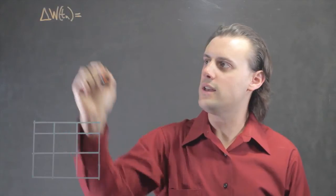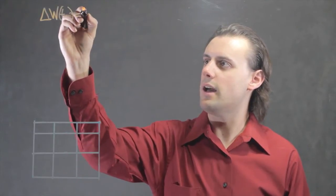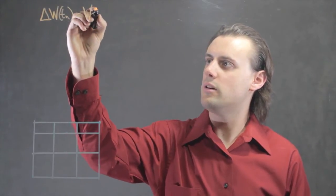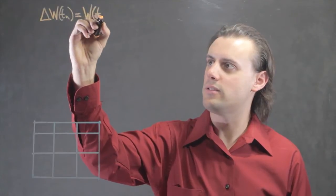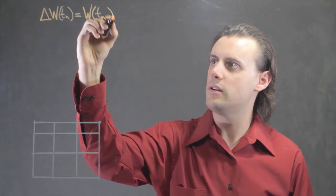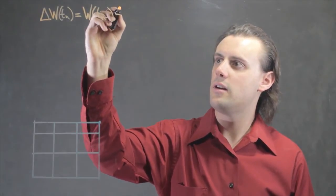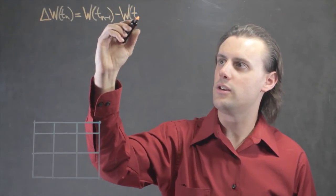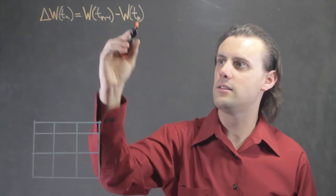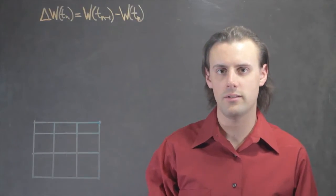This difference in weight can be calculated as the value of the weight at some previous time, Tn-1, minus the weight that you measure in your observation at Tn, where n is some integer.